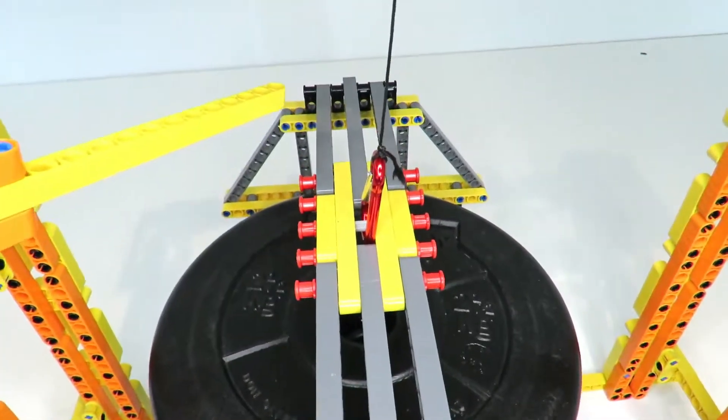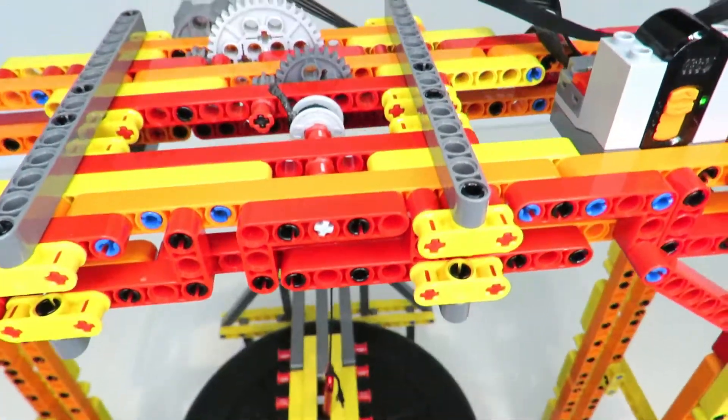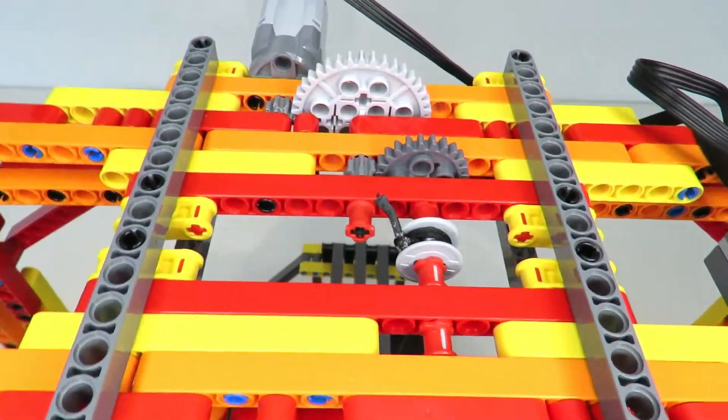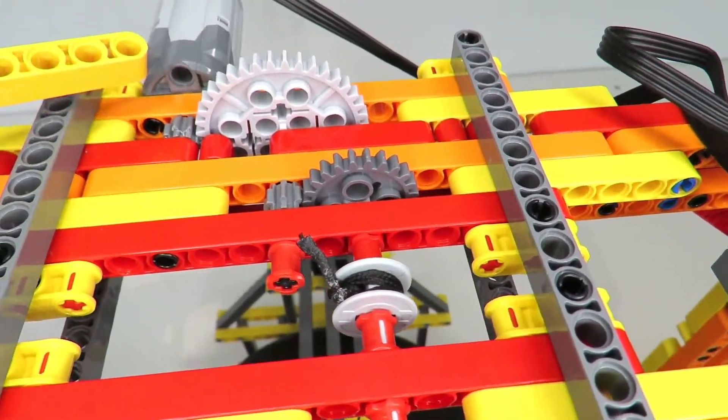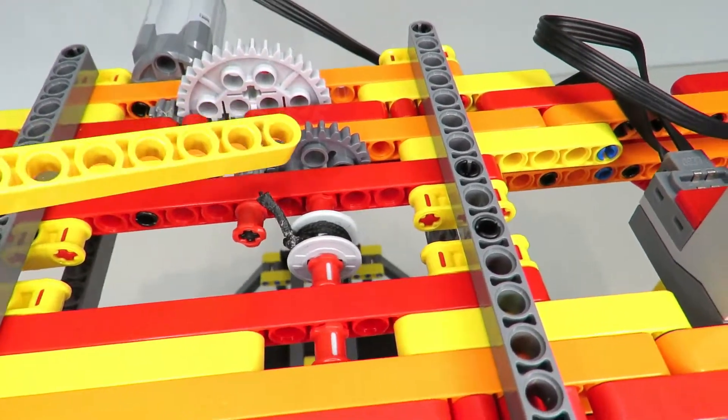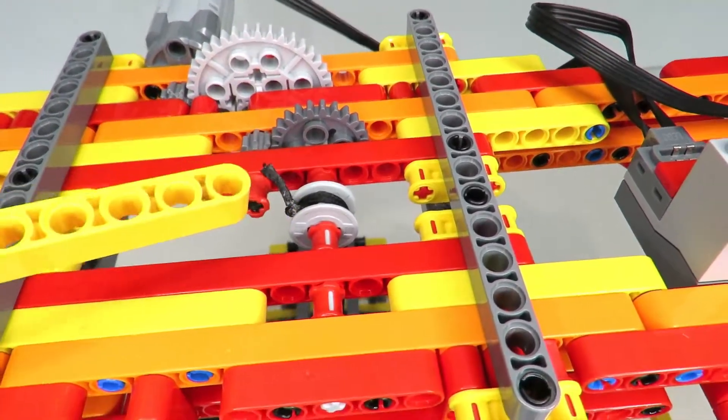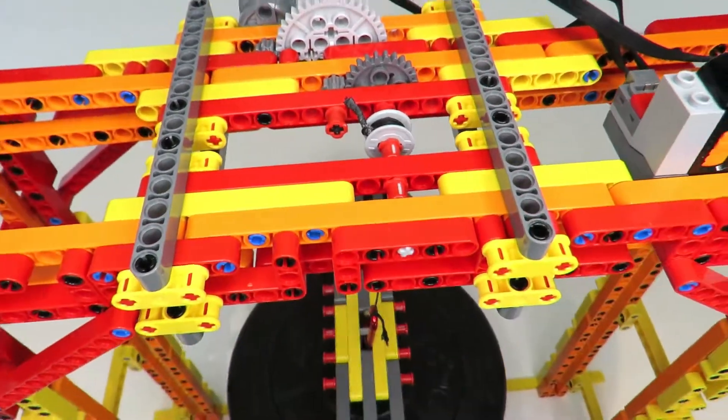The cross beam is connected to the hook, which connects to the lifting string powered by the gearbox. We've got the motor with a 1 to 5 gear ratio powering this one, then 1 to 3 onto this gear, giving an overall 1 to 15 ratio onto the lifting spool.